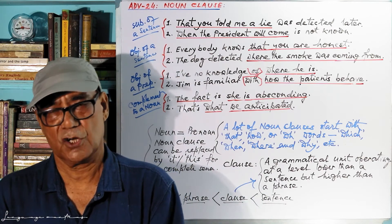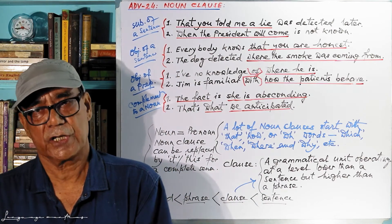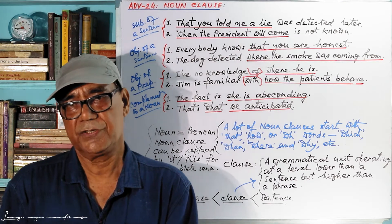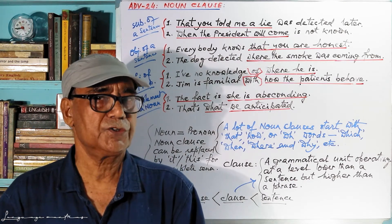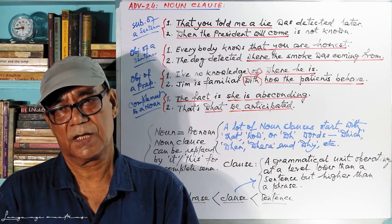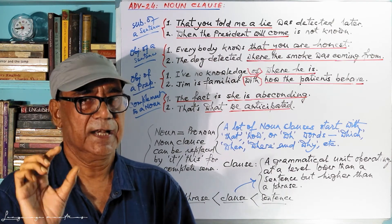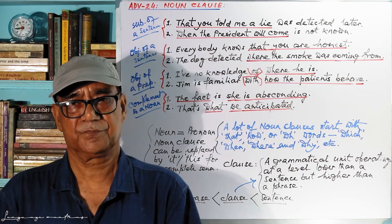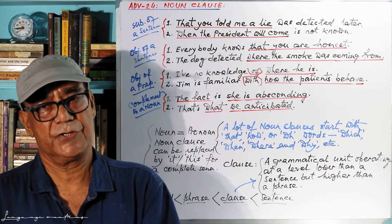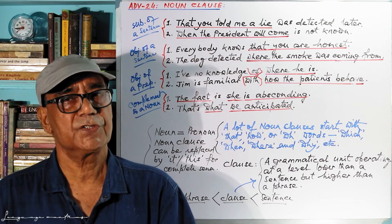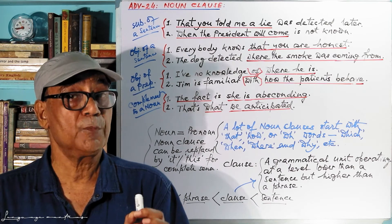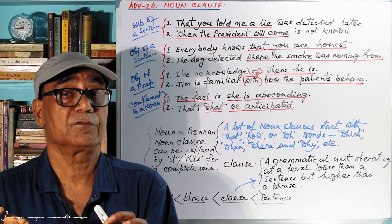So what is a noun clause? A noun clause is a clause — and we have discussed what a clause is. A noun clause is a clause that serves the function of a noun. Make it clear: a noun is a single word, whereas a noun clause is a combination of words — maybe five or six words — and all of them are not nouns. For example: